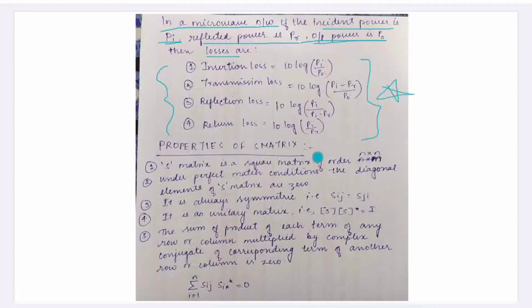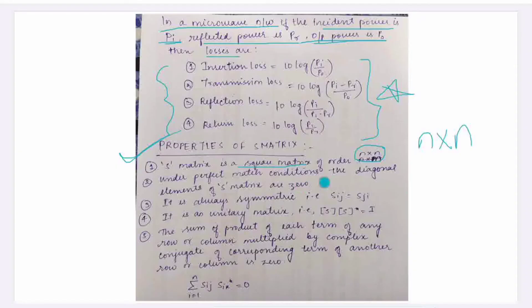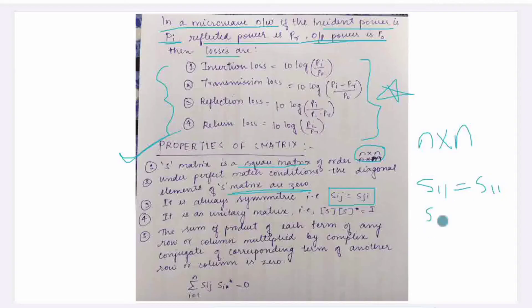Now let's discuss the properties of the S-matrix. First property: it is a square matrix of order n×n. Under perfect impedance matching condition, the diagonal elements of the S-matrix are 0. The S-matrix is always symmetric — for example, S12 equals S21.